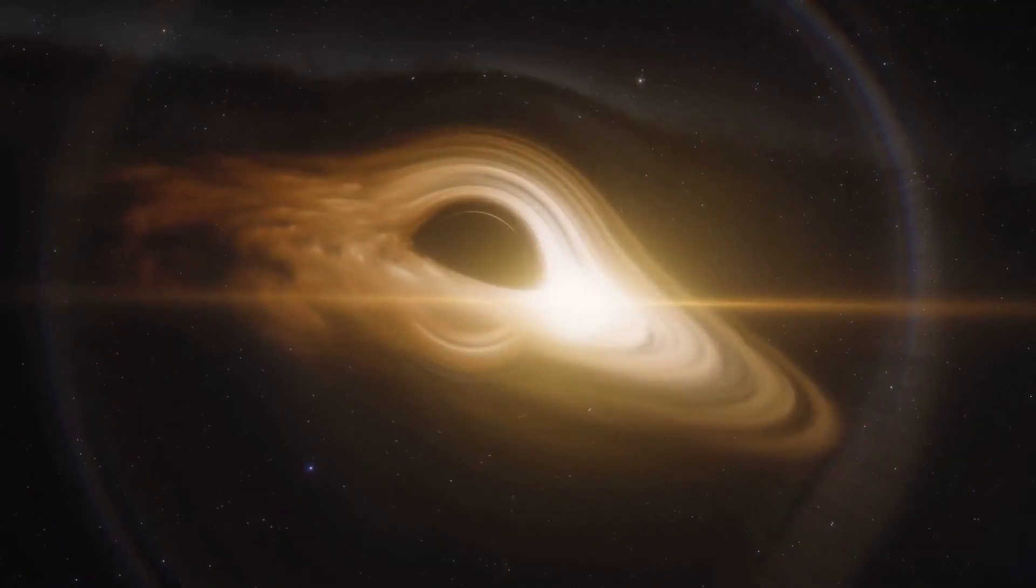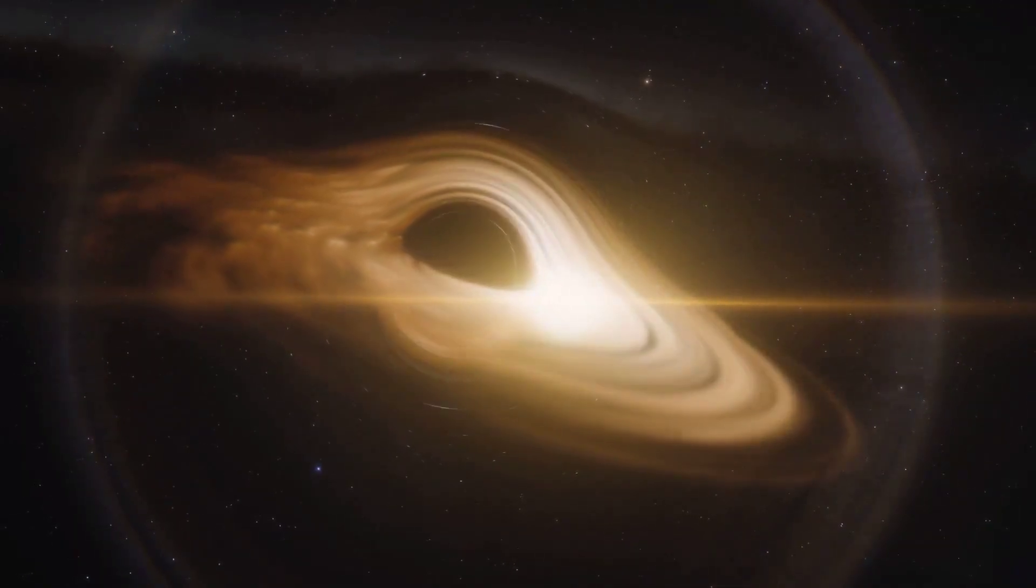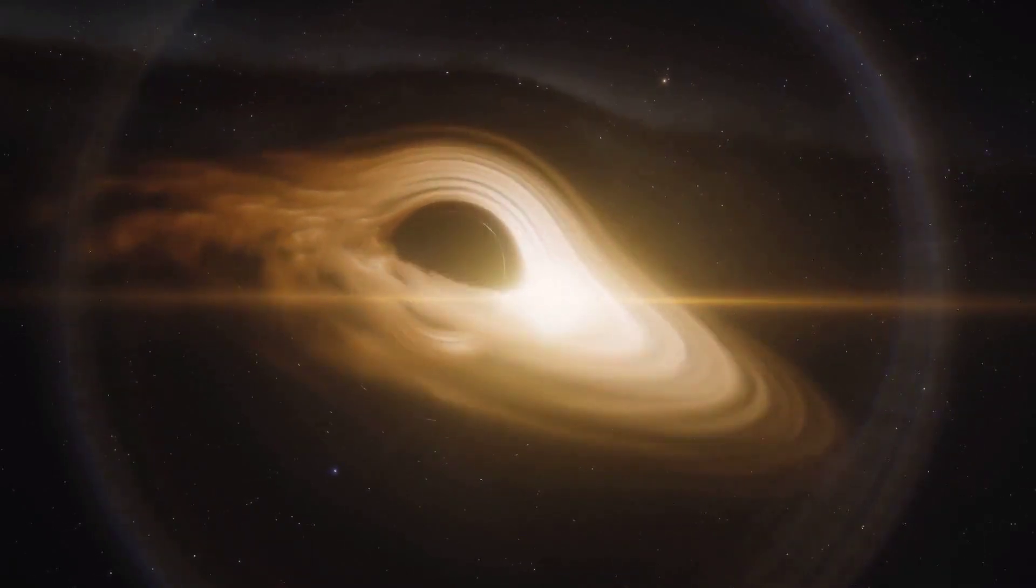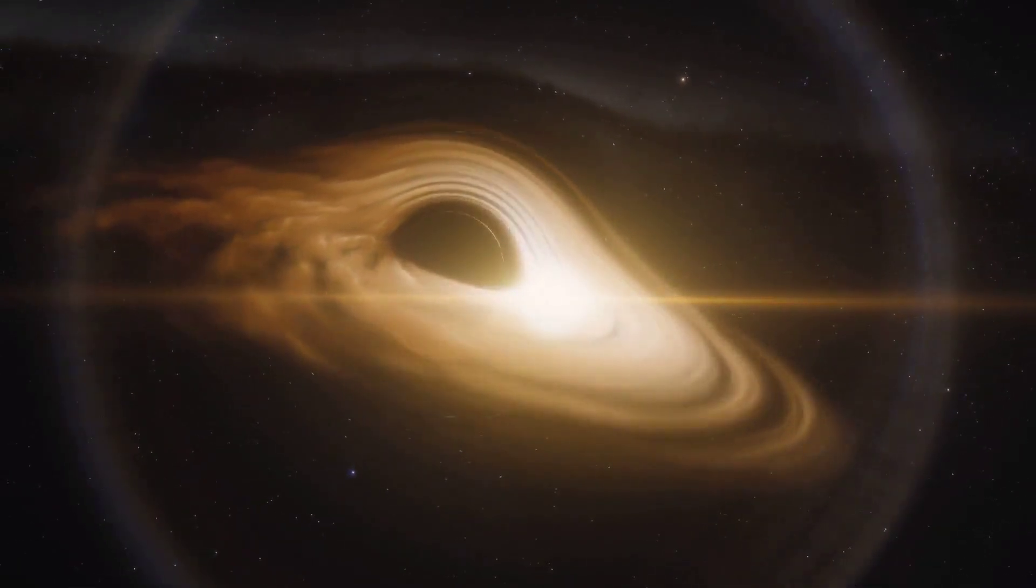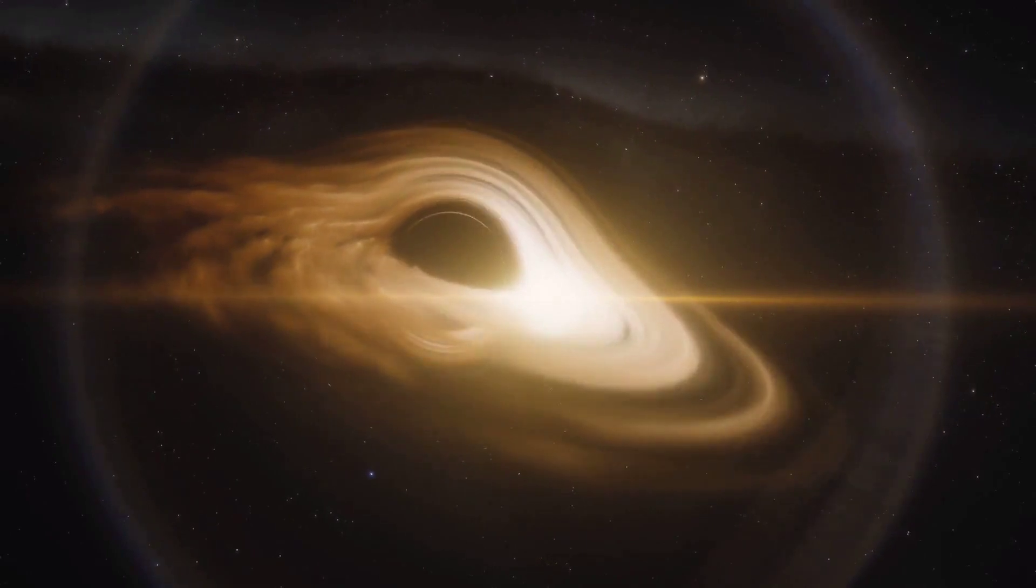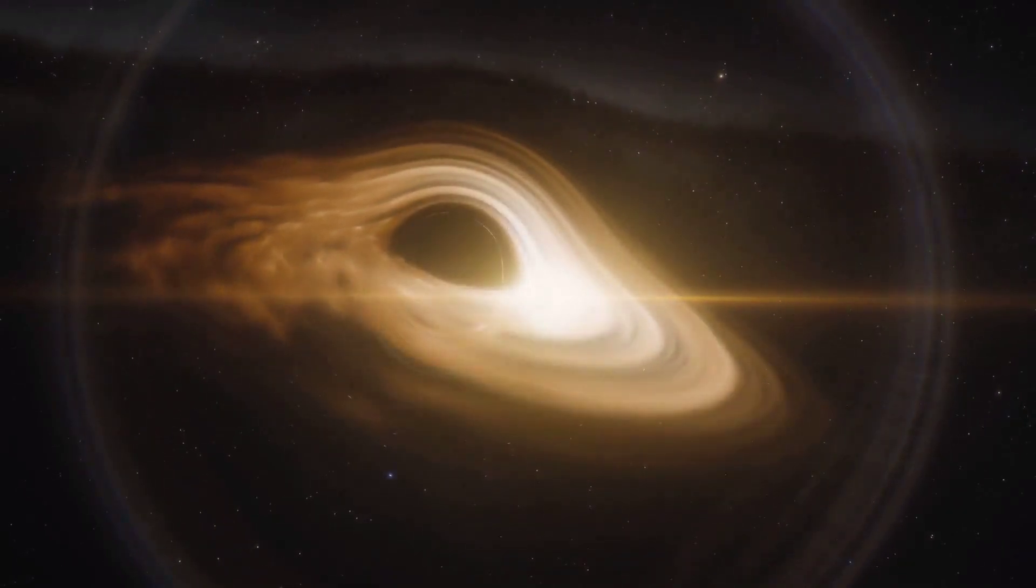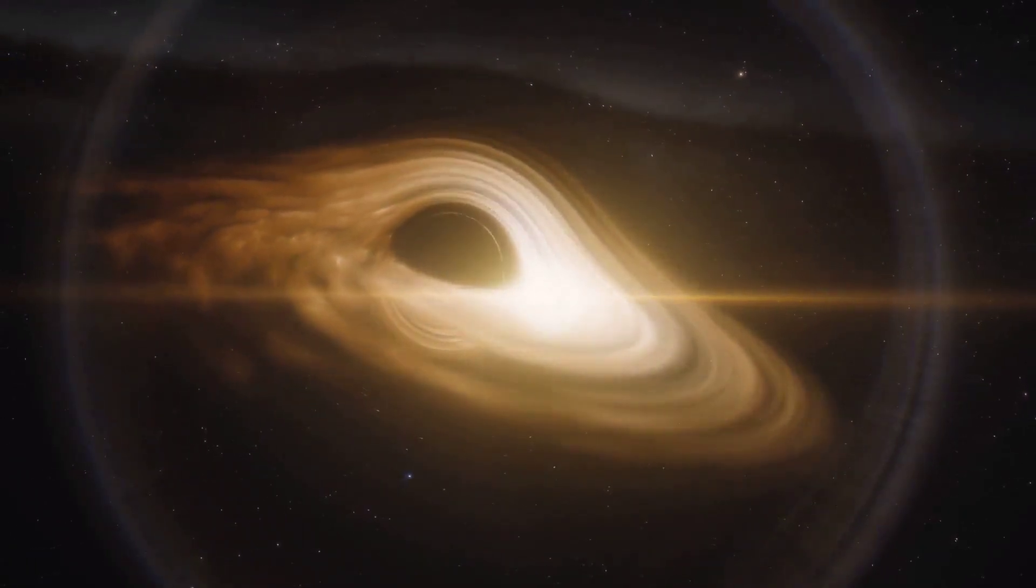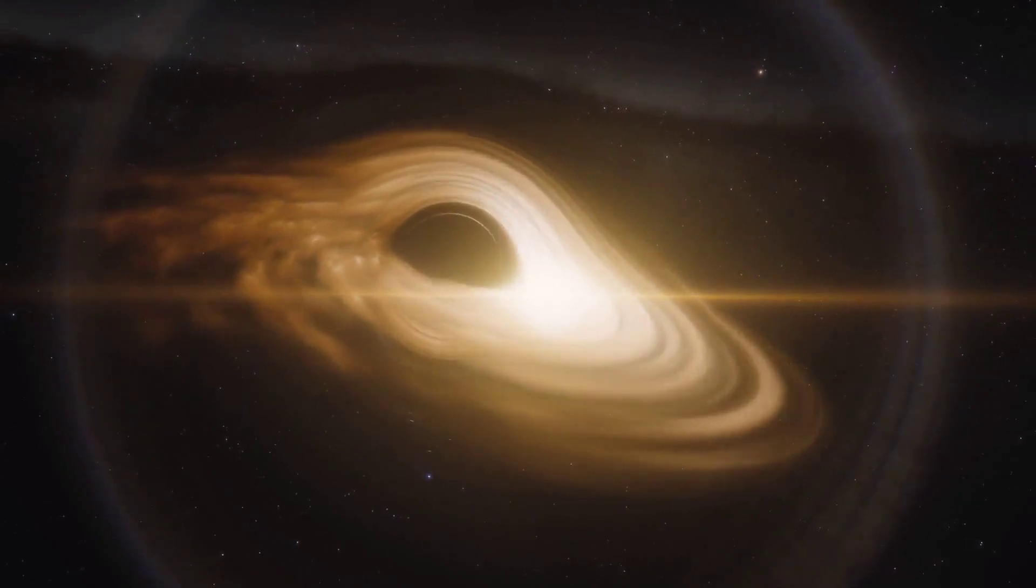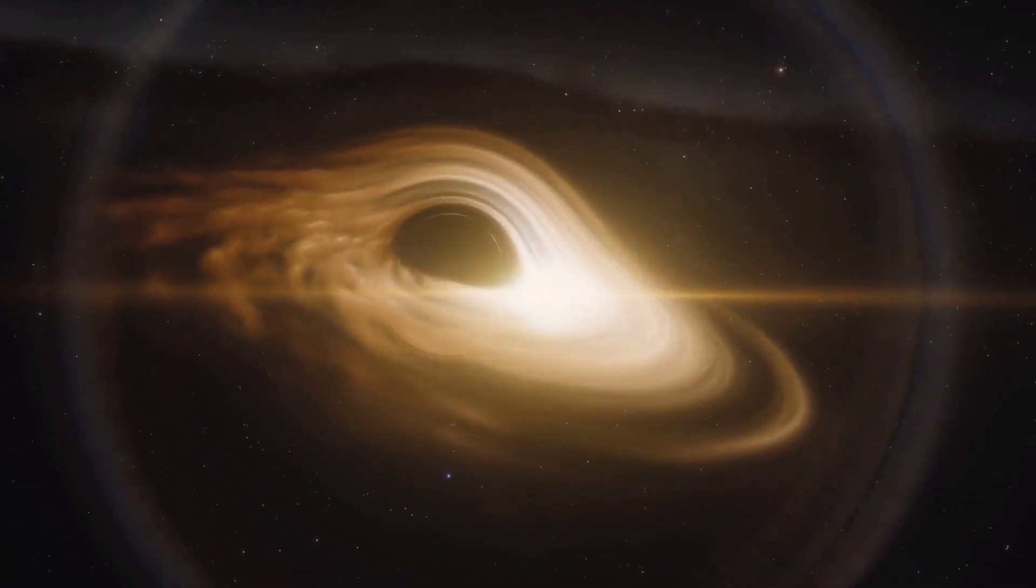There are different types of black holes, categorized mainly by their mass. Stellar black holes are formed by the collapse of massive stars. In contrast, at the center of almost all large galaxies, including our Milky Way, we find supermassive black holes, which have masses millions or even billions of times greater than our Sun.